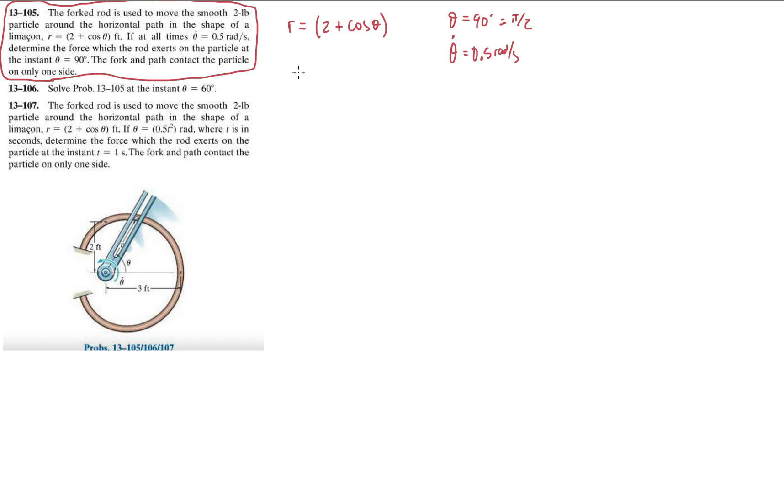Let's begin with how we always do these problems. We're going to do the first couple time derivatives of r. When we crunch the numbers here, we should get r double dot equals minus cosine theta times theta dot squared minus sine theta times theta double dot.